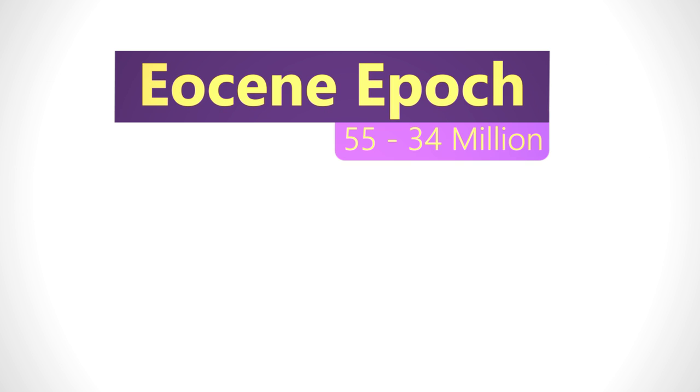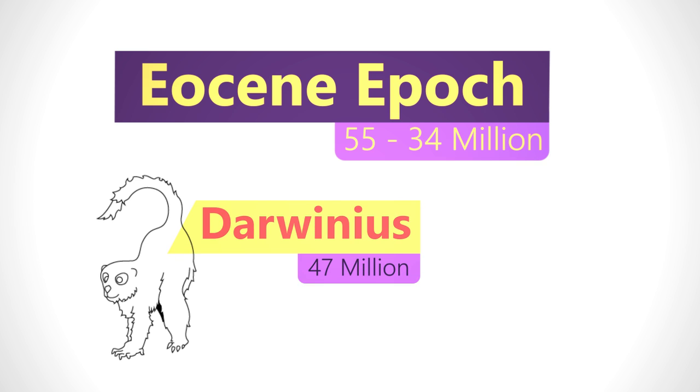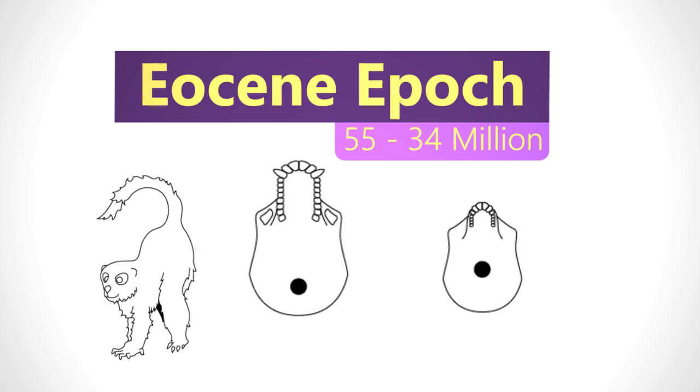The Eocene epoch, about 55 to 34 million years ago, saw the emergence of the first monkey-like primates with forward-facing eyes. During this time, an important evolutionary change happened inside primates' heads.